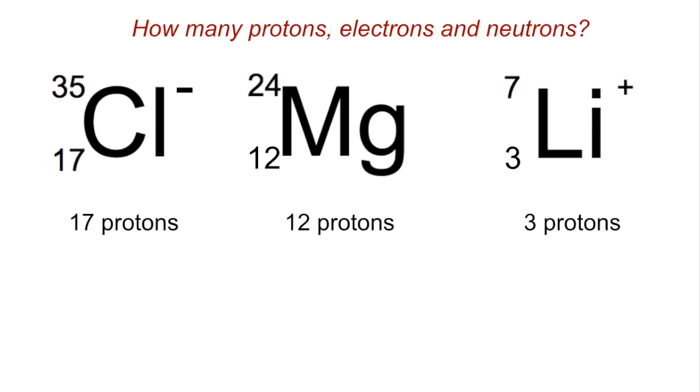Moving on to electrons now, you need to be careful and see if you've got a charge. You can see on the first one it's Cl minus, so that means there's one extra electron than the atom, so it's obviously got 18 electrons. The magnesium in the middle there has no overall charge, so that's going to have the same number of electrons, so 12. The lithium ion, well that's one plus, so it's lost an electron, so that's 2 electrons.